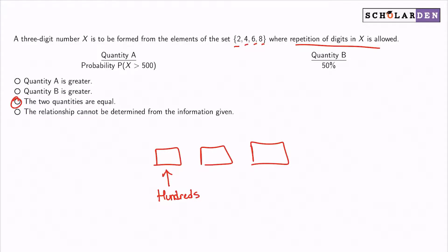To find the probability that the number that we can choose randomly is greater than 500, you really just need to look at that first hundreds digit, because you can have 200 and something, 400 and something, 600 and something, and 800 and something.